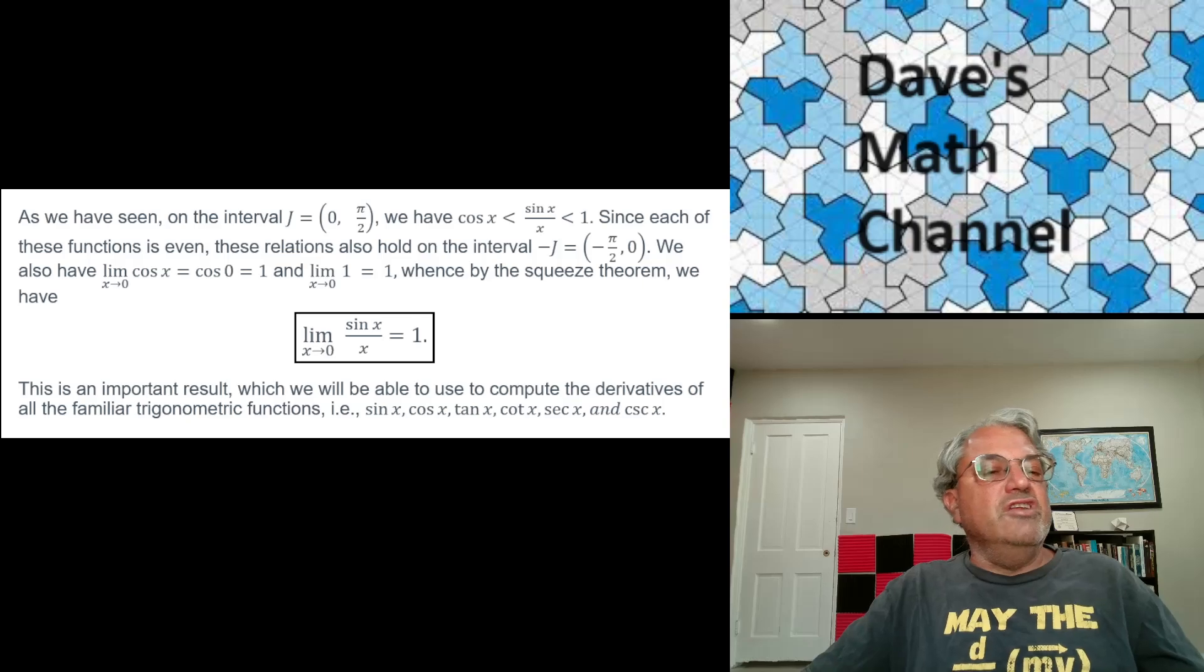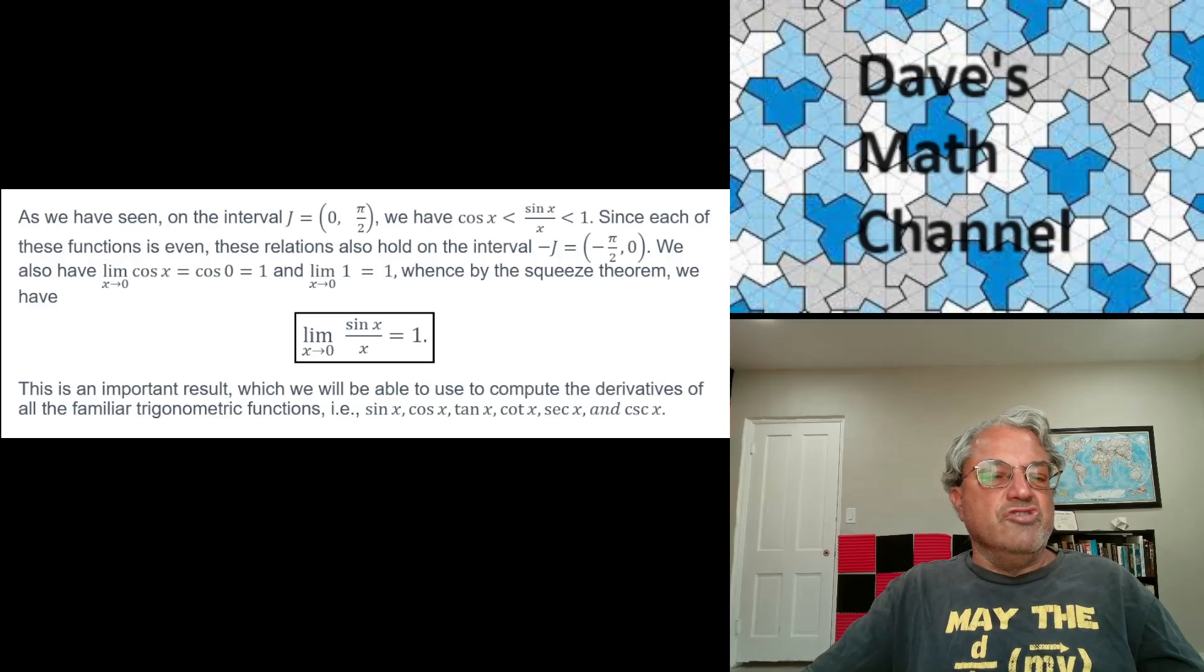So now, finally, we can use the squeeze theorem to prove that this limit is the case. Because if you look at the other two limits, the limit as x approaches 0 of cosine x, well, you don't even have to take a limit. That's just cosine of 0. And we all know that the cosine of 0 is 1. And similarly, the function 1, which is just a constant, that's 1 everywhere. So when you evaluate that at 0, you also get 1. So we're sandwiched between 1 and 1. Therefore, by the squeeze theorem, the limit as x approaches 0 of sine x over x is equal to 1.